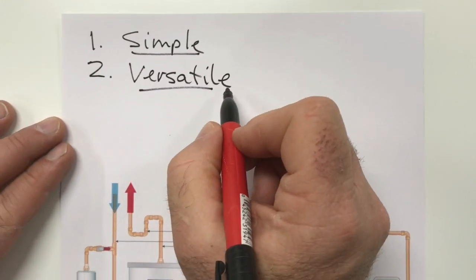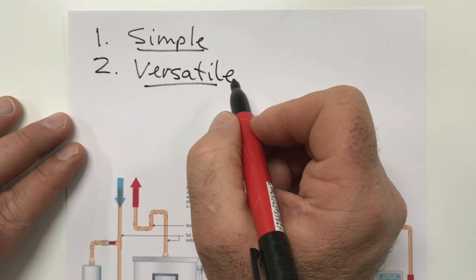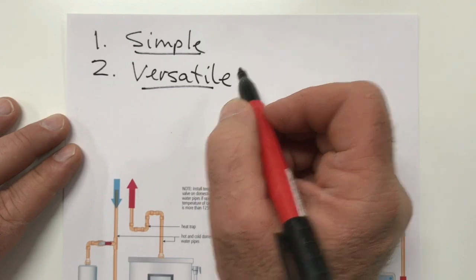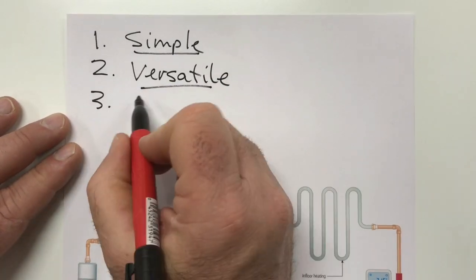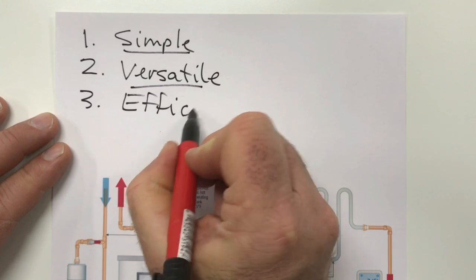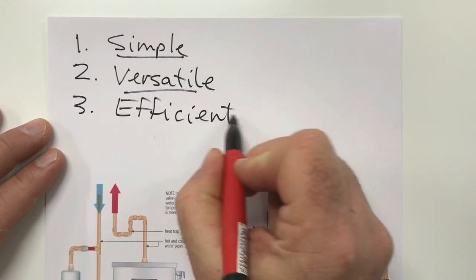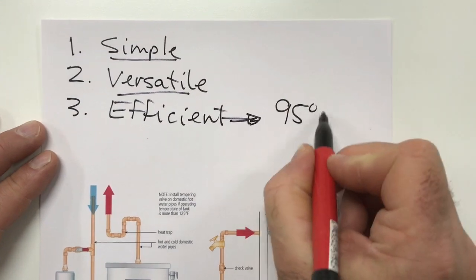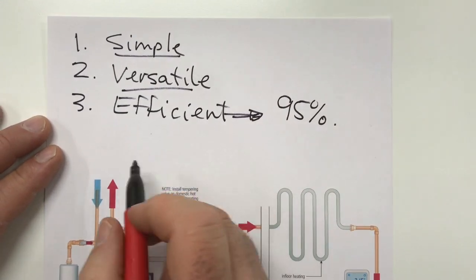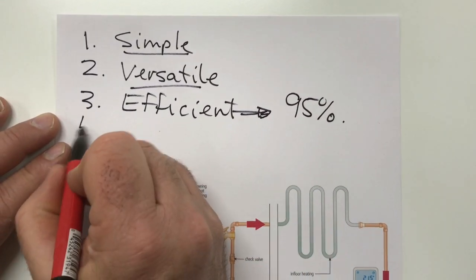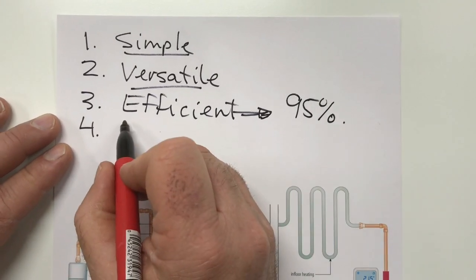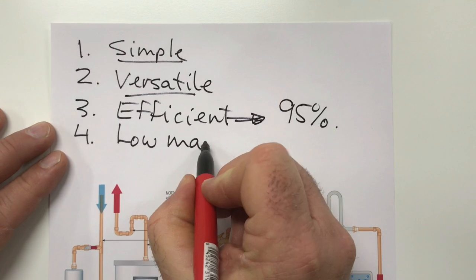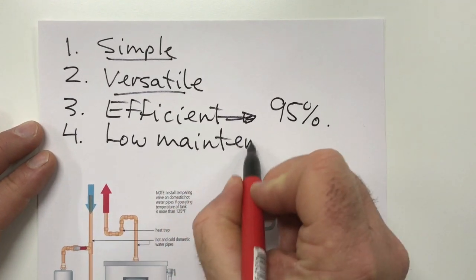Another thing is versatility. Any tank style heater is going to do a good job for you both space heating and for domestic hot water. It's efficient too. The Polaris unit that I've installed has a 95% efficiency for both legs, both the space heating and domestic hot water. And in some applications it's an especially low maintenance option as well.